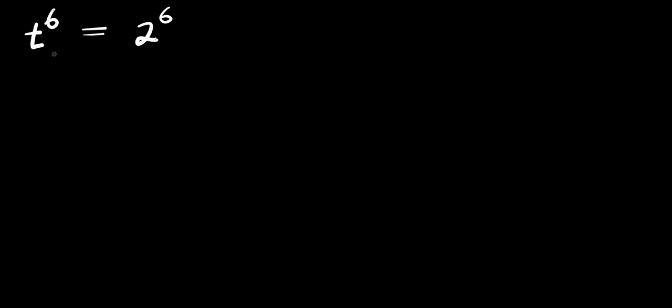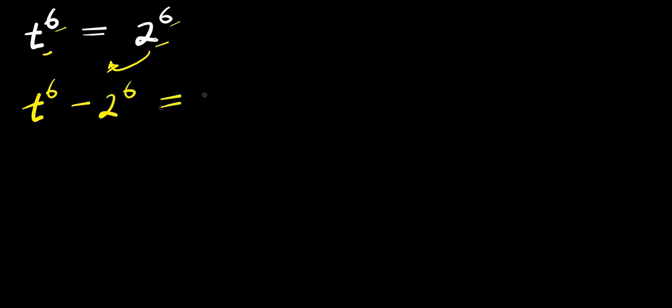Hello. How to solve this exponential problem and find all values of t that satisfies this equation. We have t to the power of 6 equals 2 to the power of 6. What we are going to do is to move this 2 power 6 over here — it becomes negative 2 power 6, so we have t power 6 minus 2 power 6, and this equals 0.